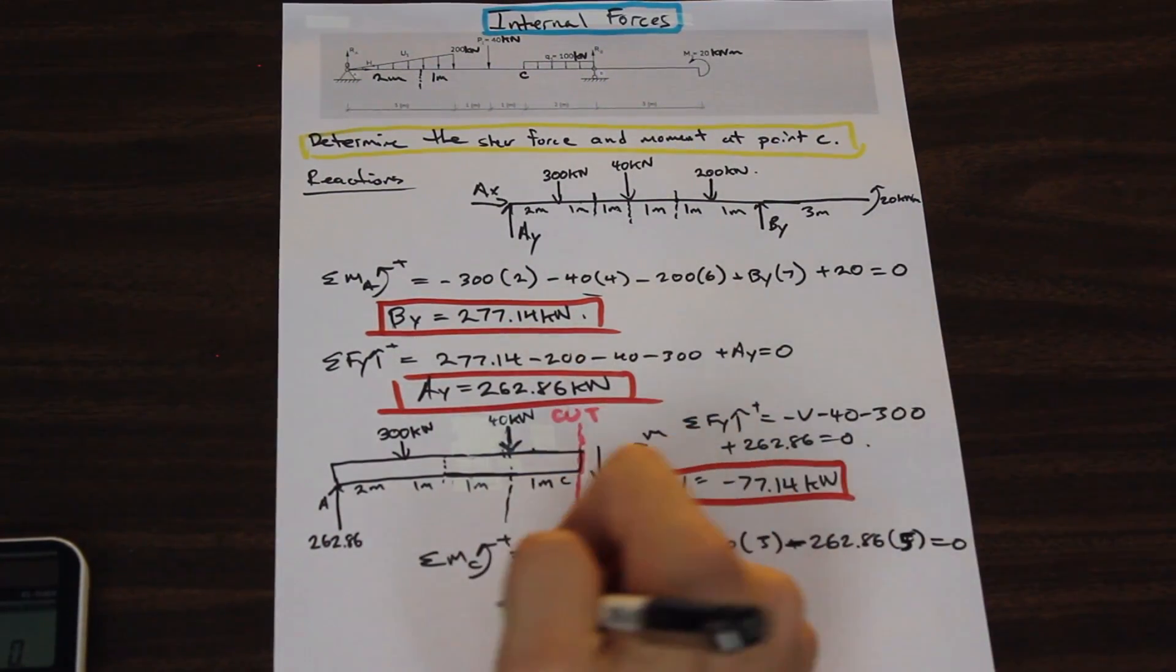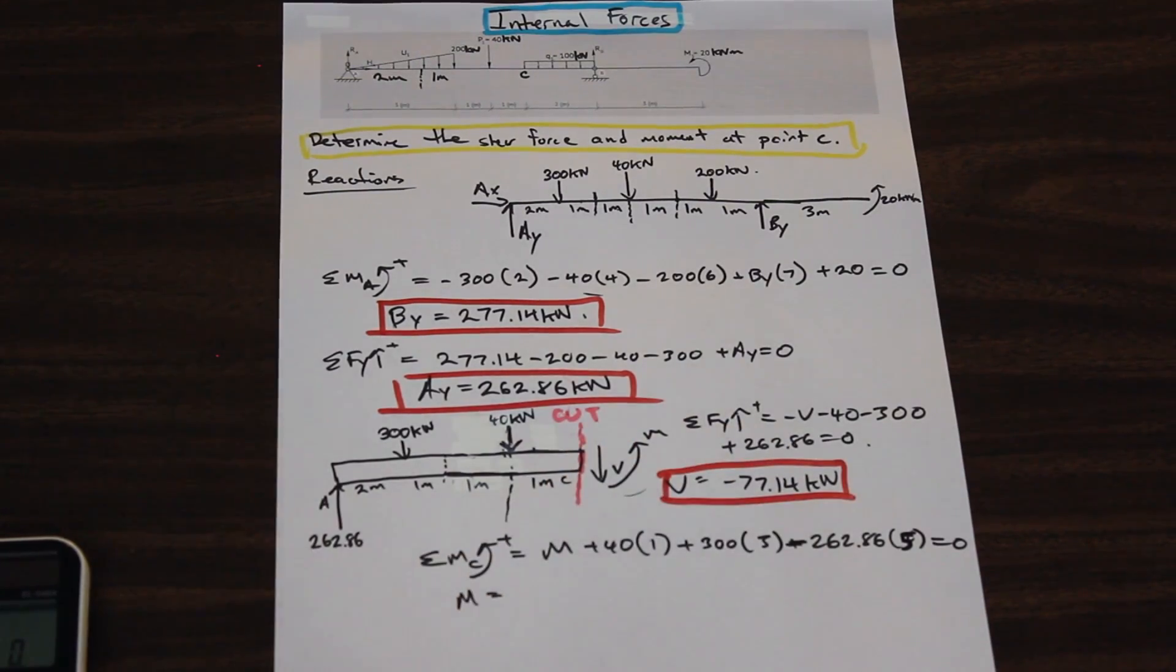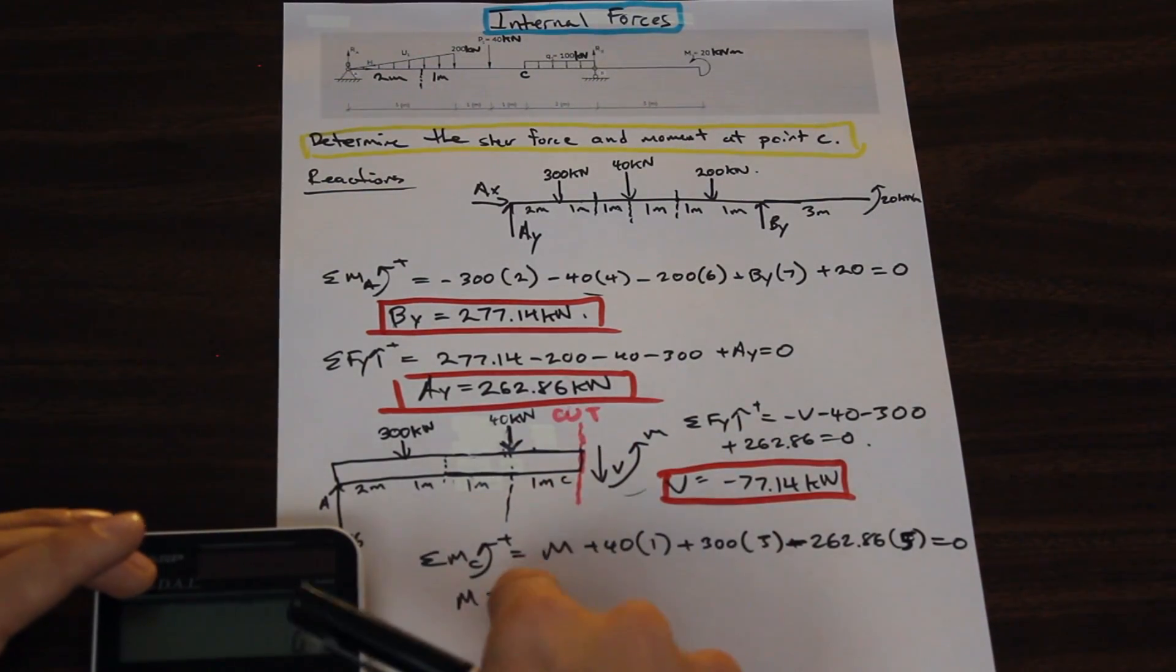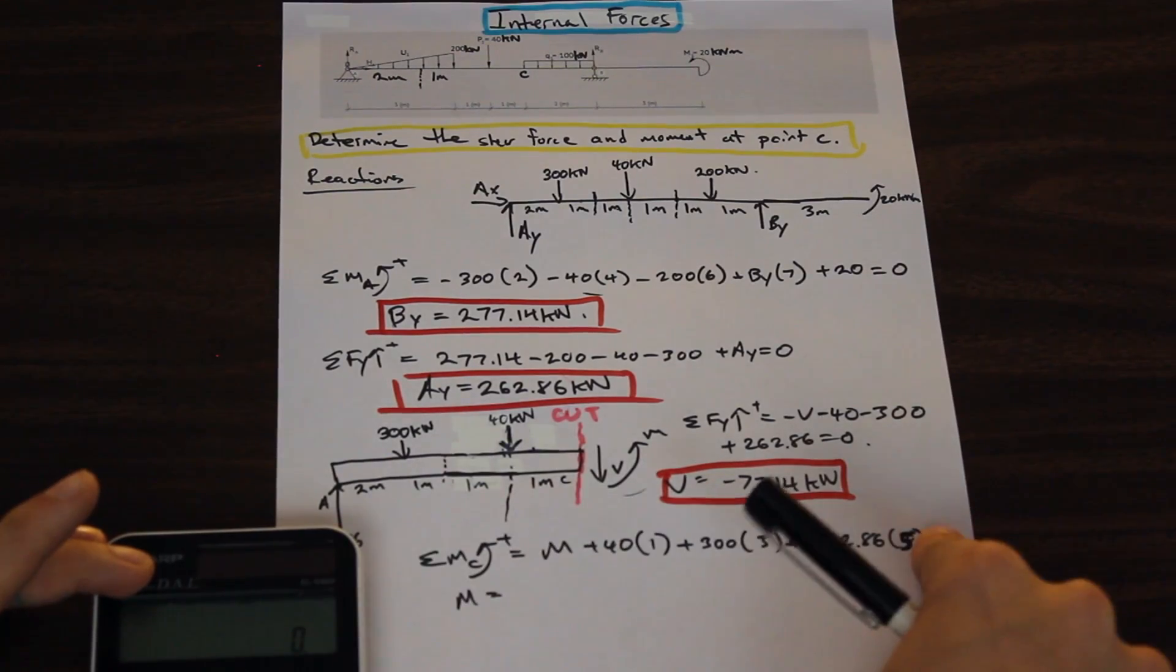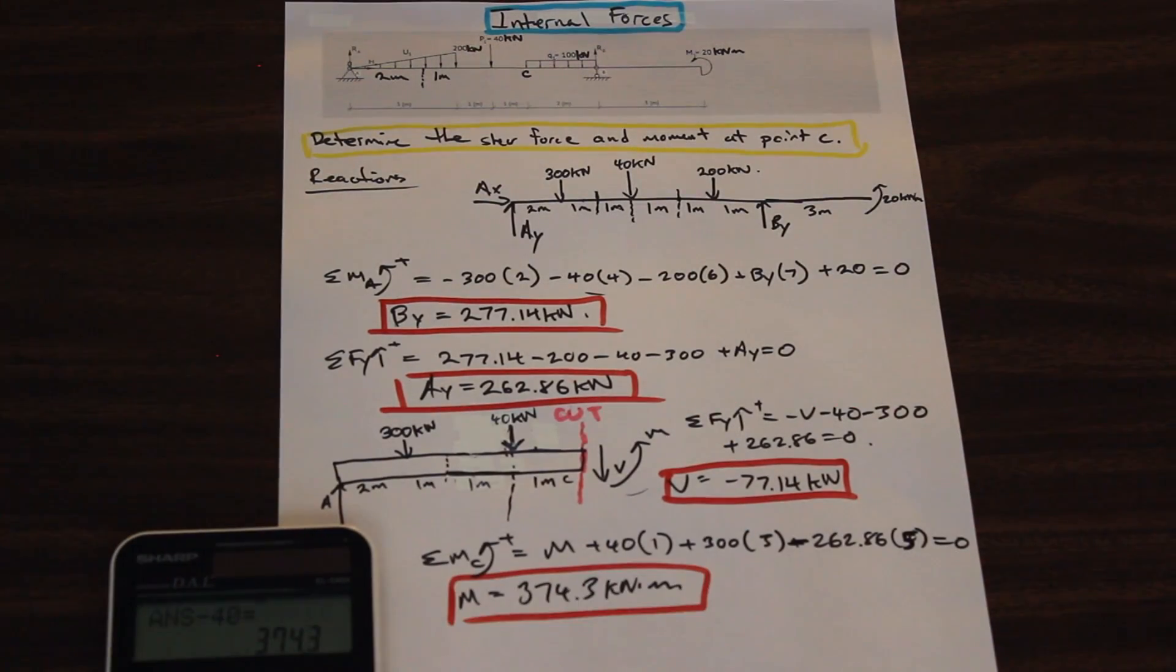That is going to be equal to 0, and if we solve for M here, if we just throw that in our calculator, M is going to go to the other side, so all of these signs are going to change, so they'll be opposite. Perfect, so we've solved for the shear, we've solved for the moment at point C, and that's it, that's what the question asked us for.